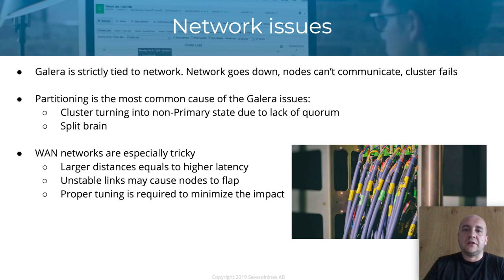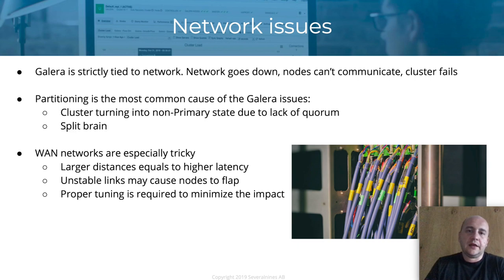Split brain is another problem. We're talking about a situation where a cluster is, due to network issues, split into two parts, and both of those parts are working — both executing queries. As you can imagine, it's quite bad for data consistency. Theoretically it shouldn't happen because of the non-primary state and those precautions, but we're talking about software, so in the event — however unlikely — it still may happen. Bugs, race conditions, something may just trigger this.